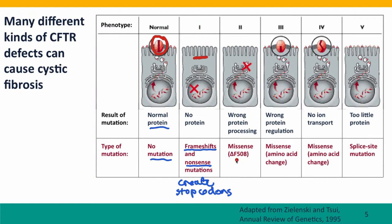Other mutations, in particular the delta F508 mutation, interfere with protein processing. The protein is synthesized normally, but the processing goes wrong, and again there's no mature protein in the cell membrane. Other mutations that change amino acids can still allow the protein to be inserted into the membrane, but it's defective — either because it's not regulated correctly, or because the channel is defective and there's no transport. Finally, there can be mutations not in the coding sequence at all that affect splice sites. These mutations result in too little protein being produced. Splice site mutations are often not absolute defects — some of the time the messenger RNA will be spliced correctly and some of the time it won't, so there may be some protein in the membrane, but not enough to do the job needed.